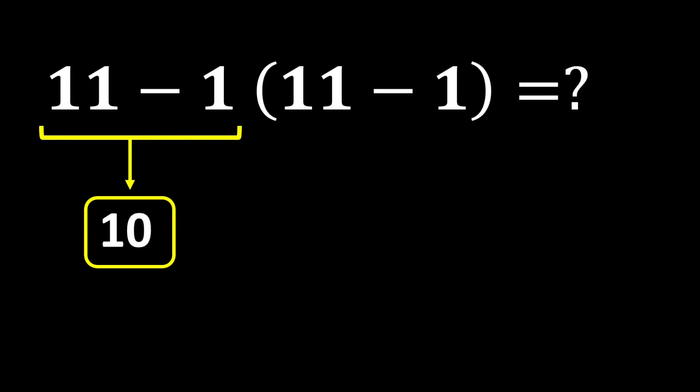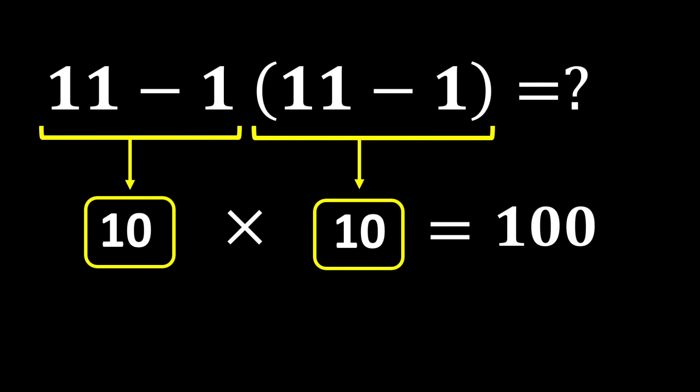11 minus 1 gives us 10, and again inside the parentheses we have 11 minus 1, which again gives us 10. And 10 multiplied by 10 becomes 100.